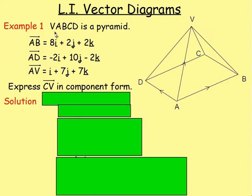We have V, A, B, C, D — a pyramid. We can see it here. A, B, C, D and V are the vertices. The vector AB going from A to B is the vector 8i plus 2j plus 2k. Going from A to D is the vector negative 2i plus 10j minus 2k. And going from A to V is the vector i plus 7j plus 7k.